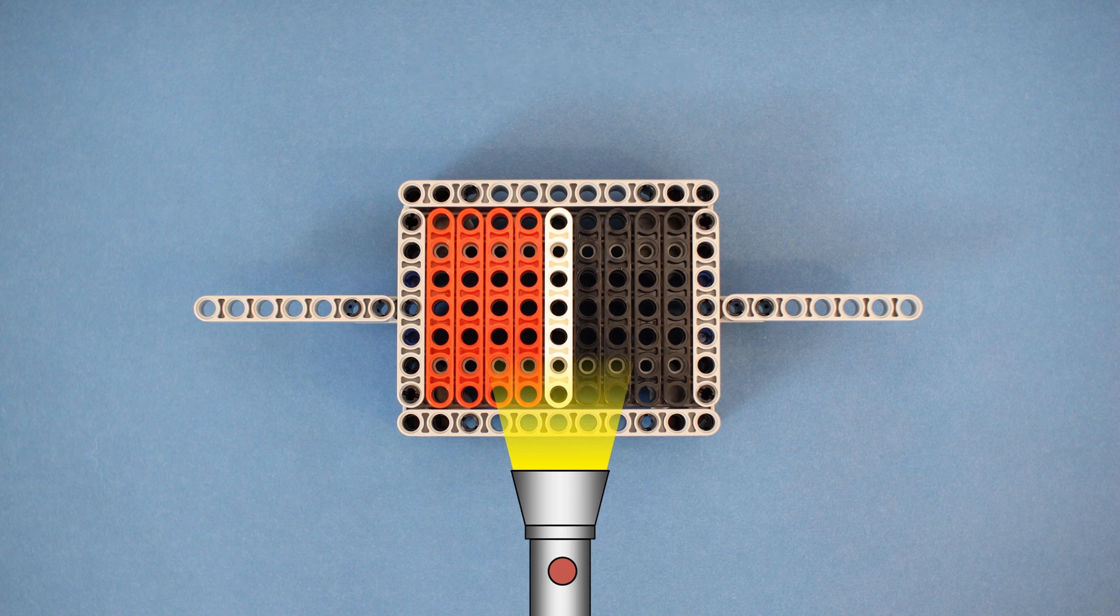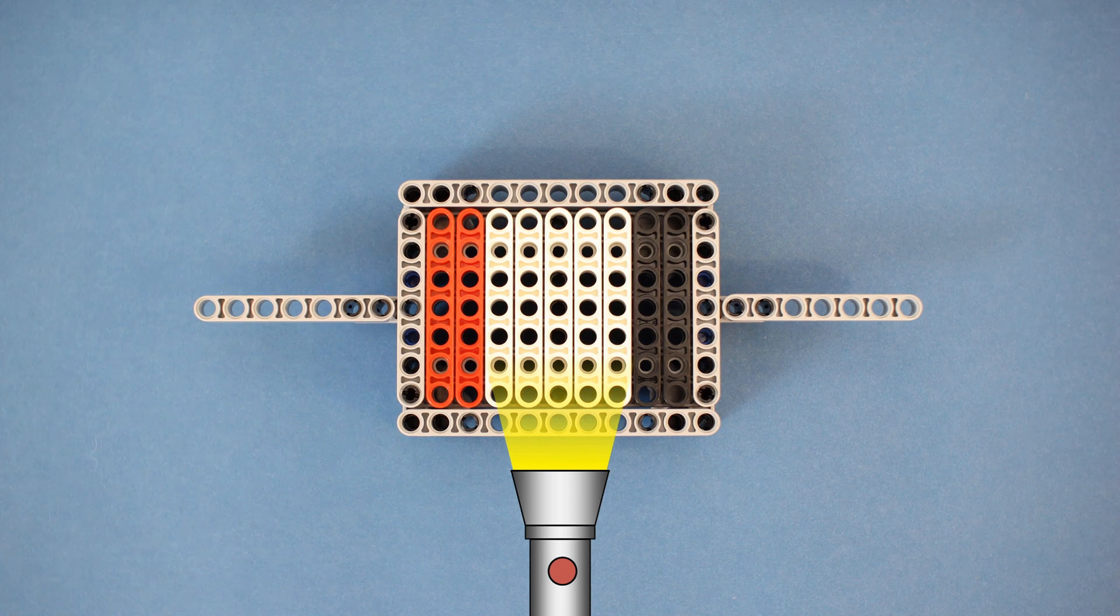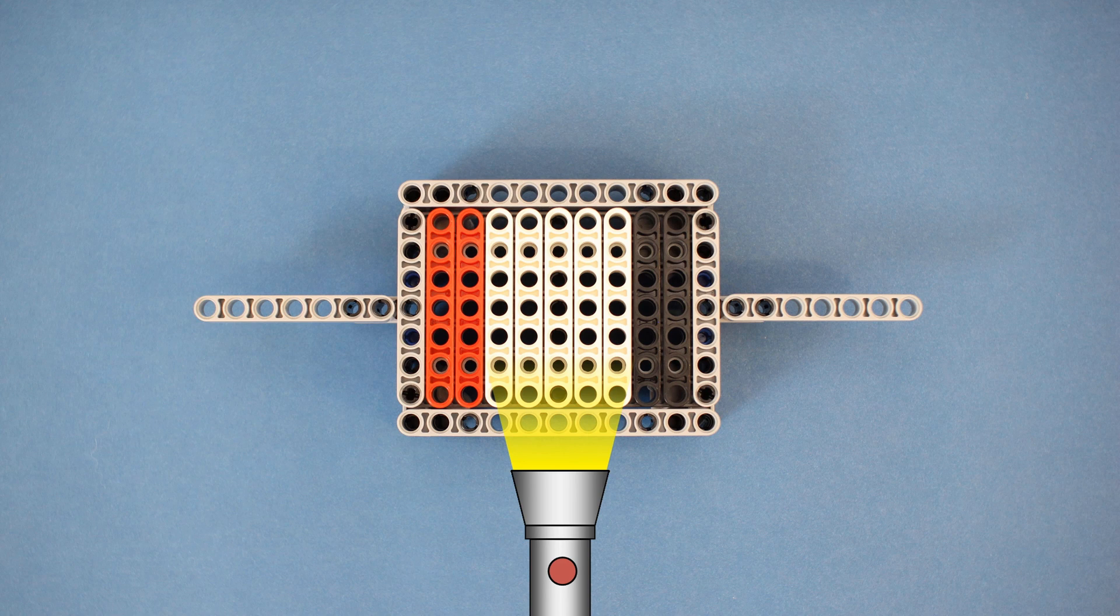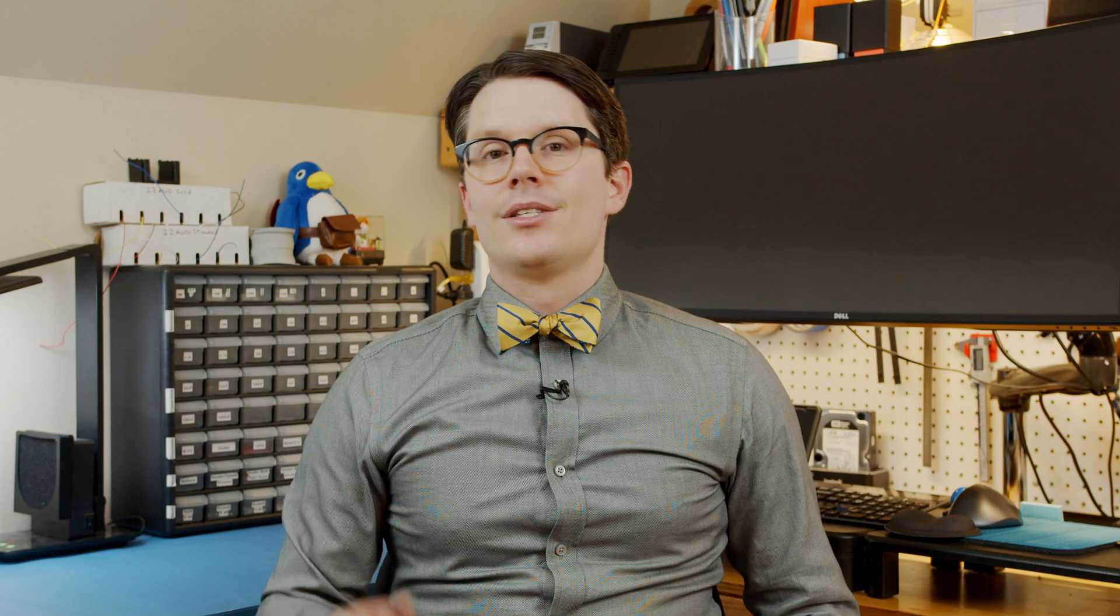If we shine light onto an LED, the depletion region becomes slightly larger, which takes over parts of the P- and N-type materials. If we remove the light, the depletion region decreases in size. As the depletion region varies in size, it changes the capacitance between the P- and N-type regions, which we can measure with this capacitance meter.